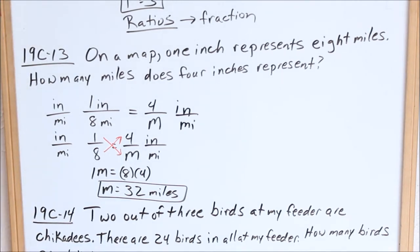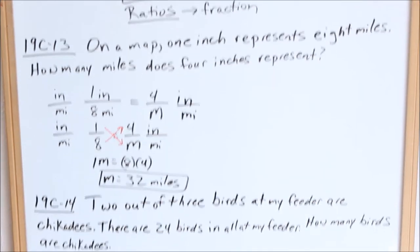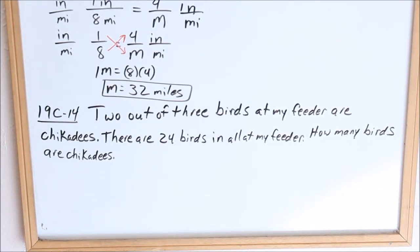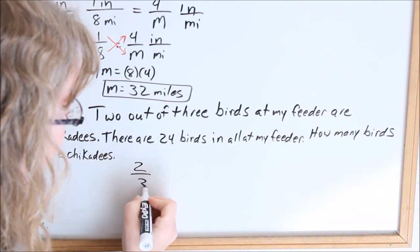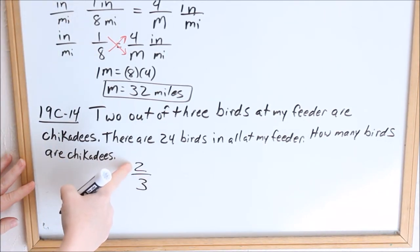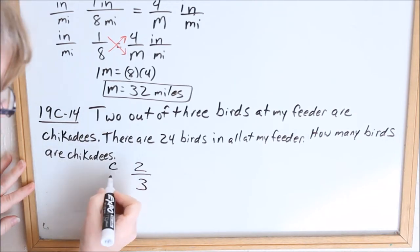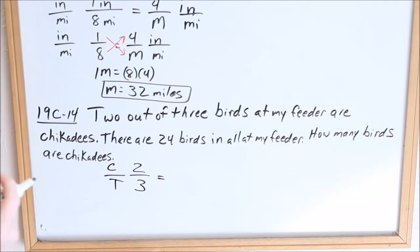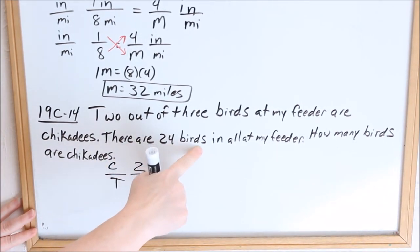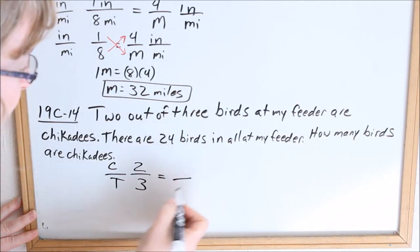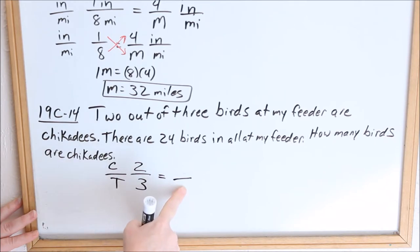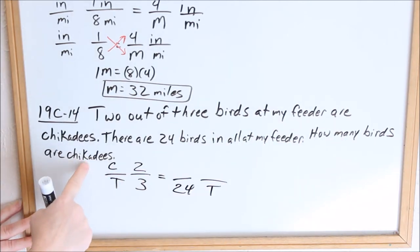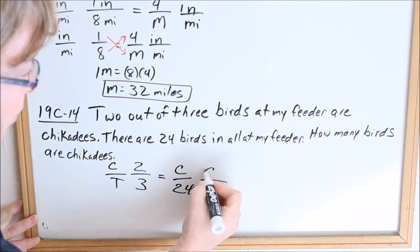Let's look at 19c14. Remember, you're trying to have one fraction set equal to another. Two out of three birds at my feeder are chickadees. Two represents chickadees, three represents the total birds — so I'll call it T for total. I'll set that equal to another fraction: there are 24 birds in all, so 24 represents total in the denominator. How many birds are chickadees? That's what we're trying to find, so I put C in the numerator.